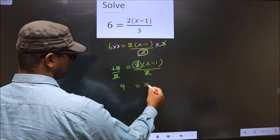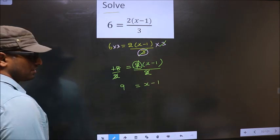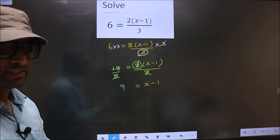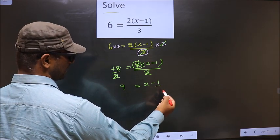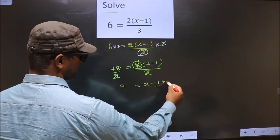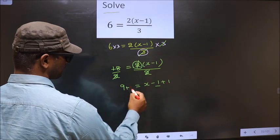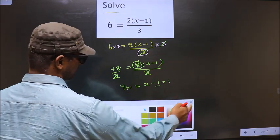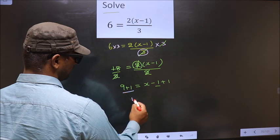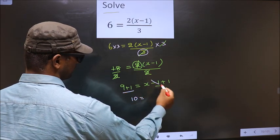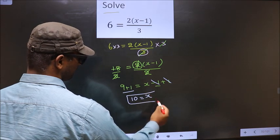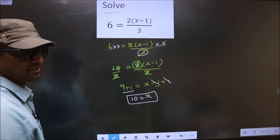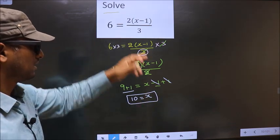Now we should make x the subject. For that, we should remove minus 1. To remove minus 1, you add 1 on both sides. So 9 plus 1 is 10, equals minus 1 plus 1 cancels out, leaving x. So this is our answer, x equals 10.